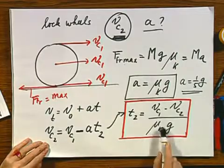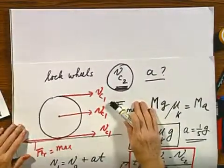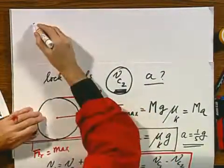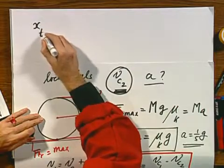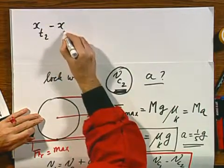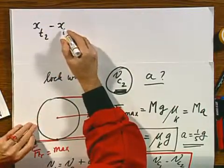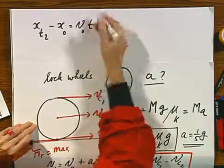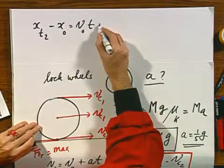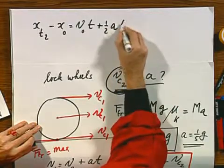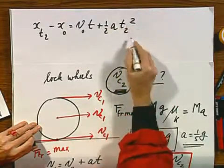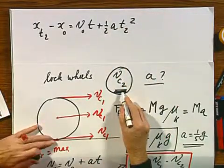So this is how long it takes for this car under the influence of this squeaking friction to slow down to this velocity. Now is the question, what is the distance traveled? Well, that's relatively easy now, because X at that time T_2 minus X at time T_0, general equation which we had earlier in the course equals V_0 T plus one half A T squared. This is the moment then that we have reached this velocity.